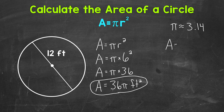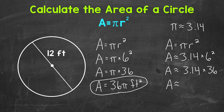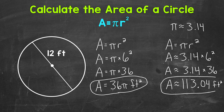Let's write out our formula: area equals pi r squared. Then we can plug in — area is approximately 3.14 times 6 squared. Let's do 6 squared first: that equals 36. So now we have 3.14 times 36, which gives us an approximate area of 113.04 square feet. So that is an approximate area of that circle.